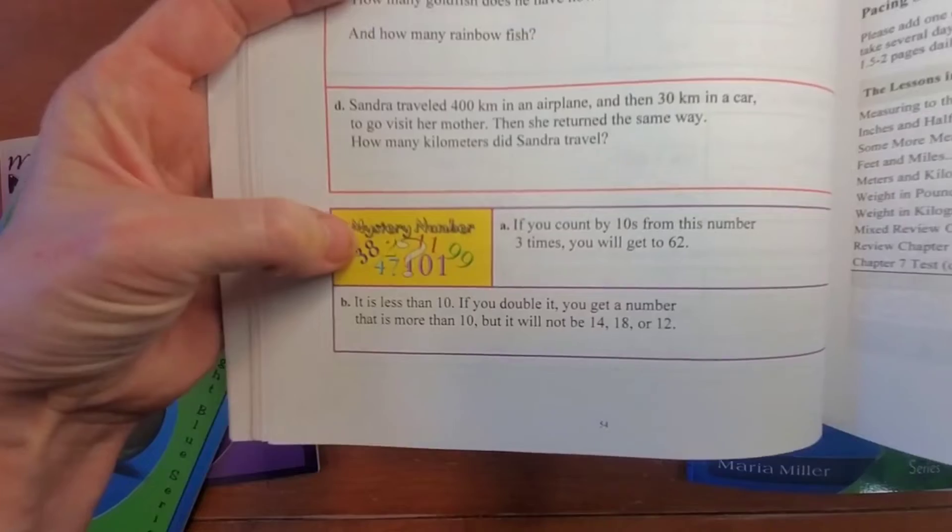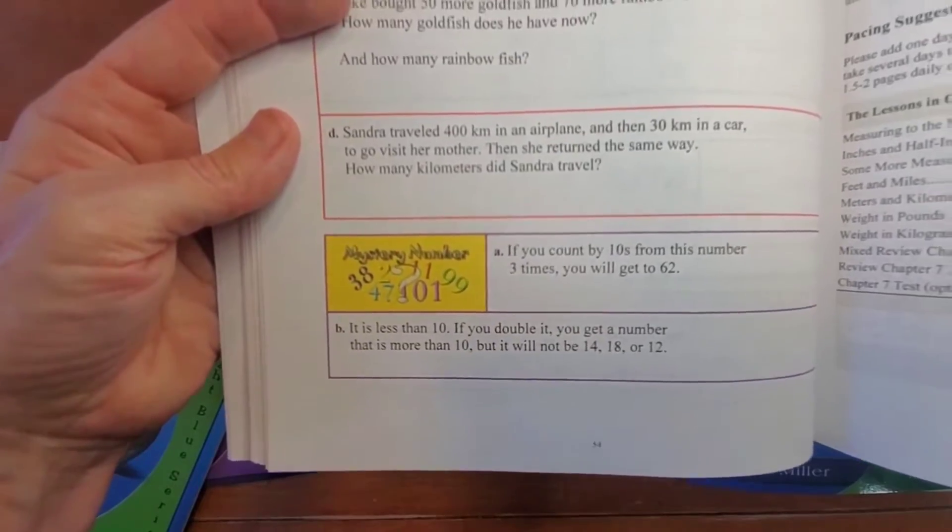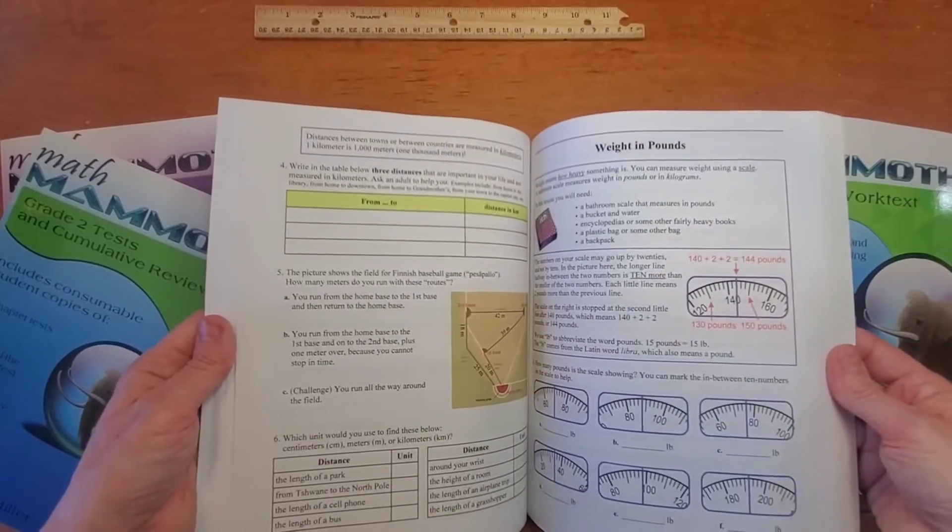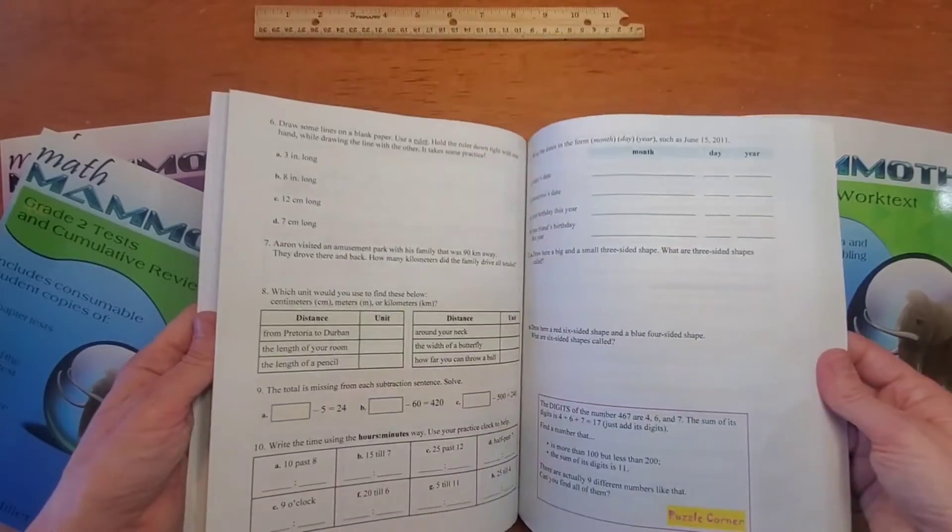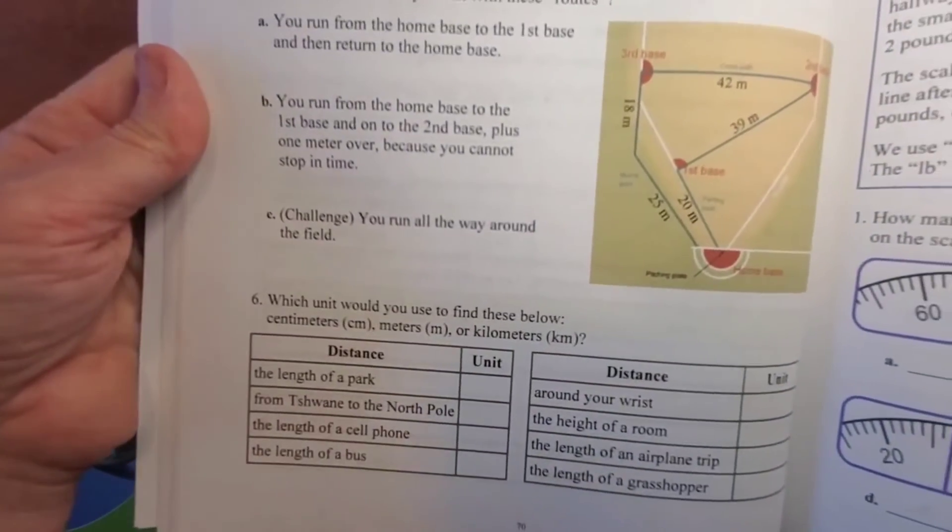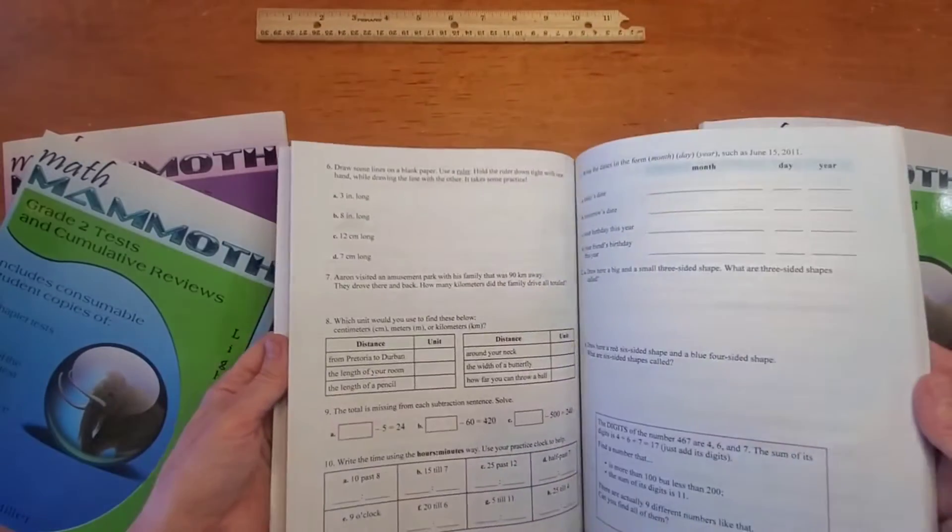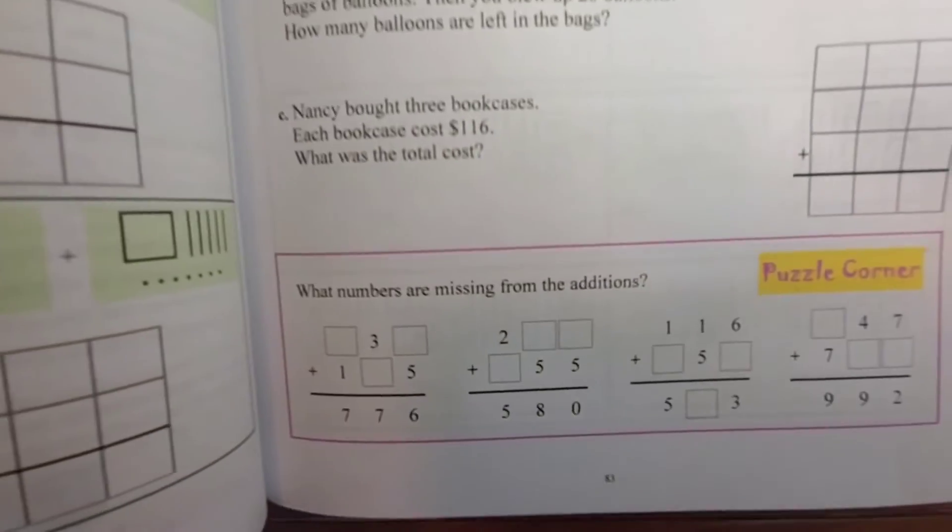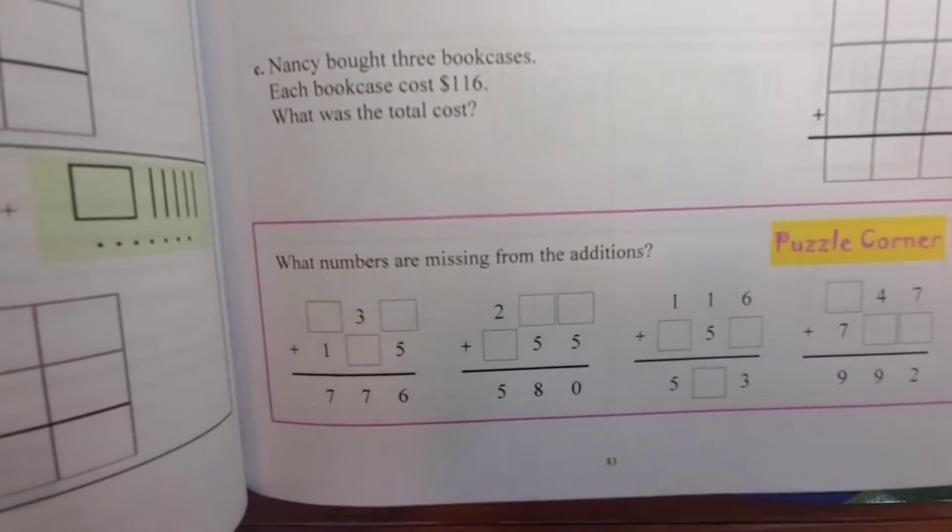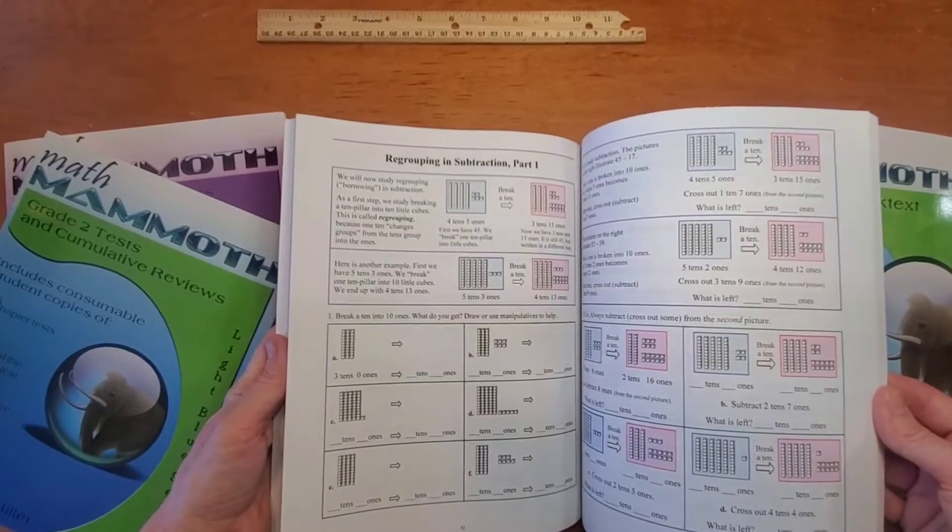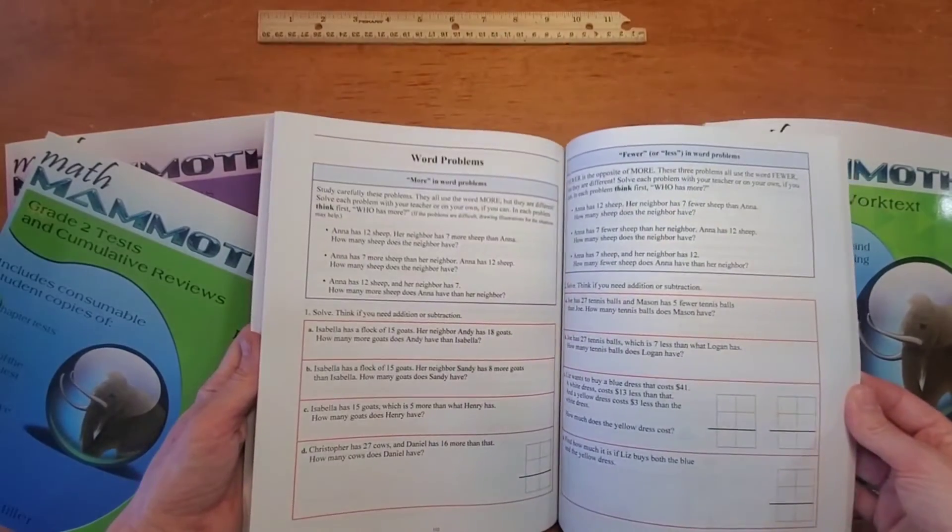Sometimes there's these little extra things at the bottom. Mystery numbers or little activities that they have. You're getting into weight and distance. Puzzle corner, that's what they'll call it. Sometimes they have a puzzle corner too.